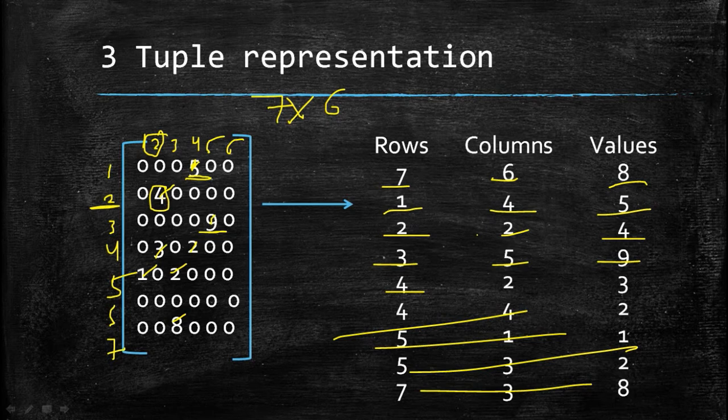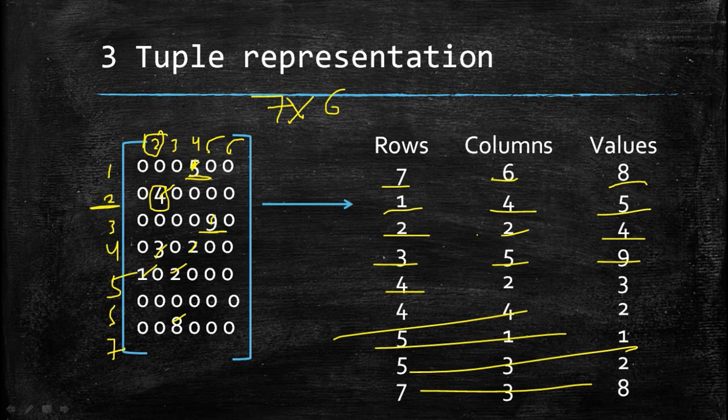We have now studied what a sparse matrix is, its advantages, why it should be used, and how to represent it in three-column representation. In the next video, we will write a program that accepts a sparse matrix and outputs its three-column representation.